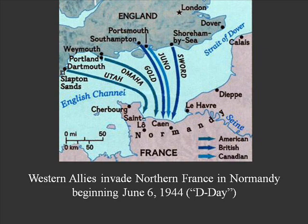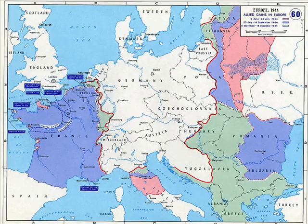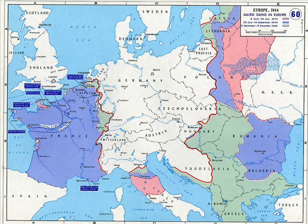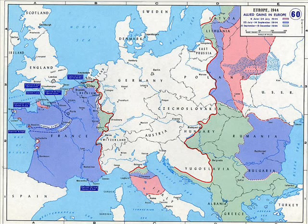From the Normandy beachhead, Allied forces broke out and drove toward Paris. When they took Paris, the Germans quickly retreated back into Germany. The French were happy to get their country back and raised a French army. At this point there were roughly three American armies, one British, one Canadian, and one French army in France — six allied armies preparing for the invasion of Germany — plus a huge Soviet force in the east. From fall 1944 into spring 1945 they invaded Germany. Hitler refused to surrender and issued proclamations that any town flying a white flag would be bombed by the German Air Force — threatening to bomb his own people to force them to keep fighting. Hitler had lost it.